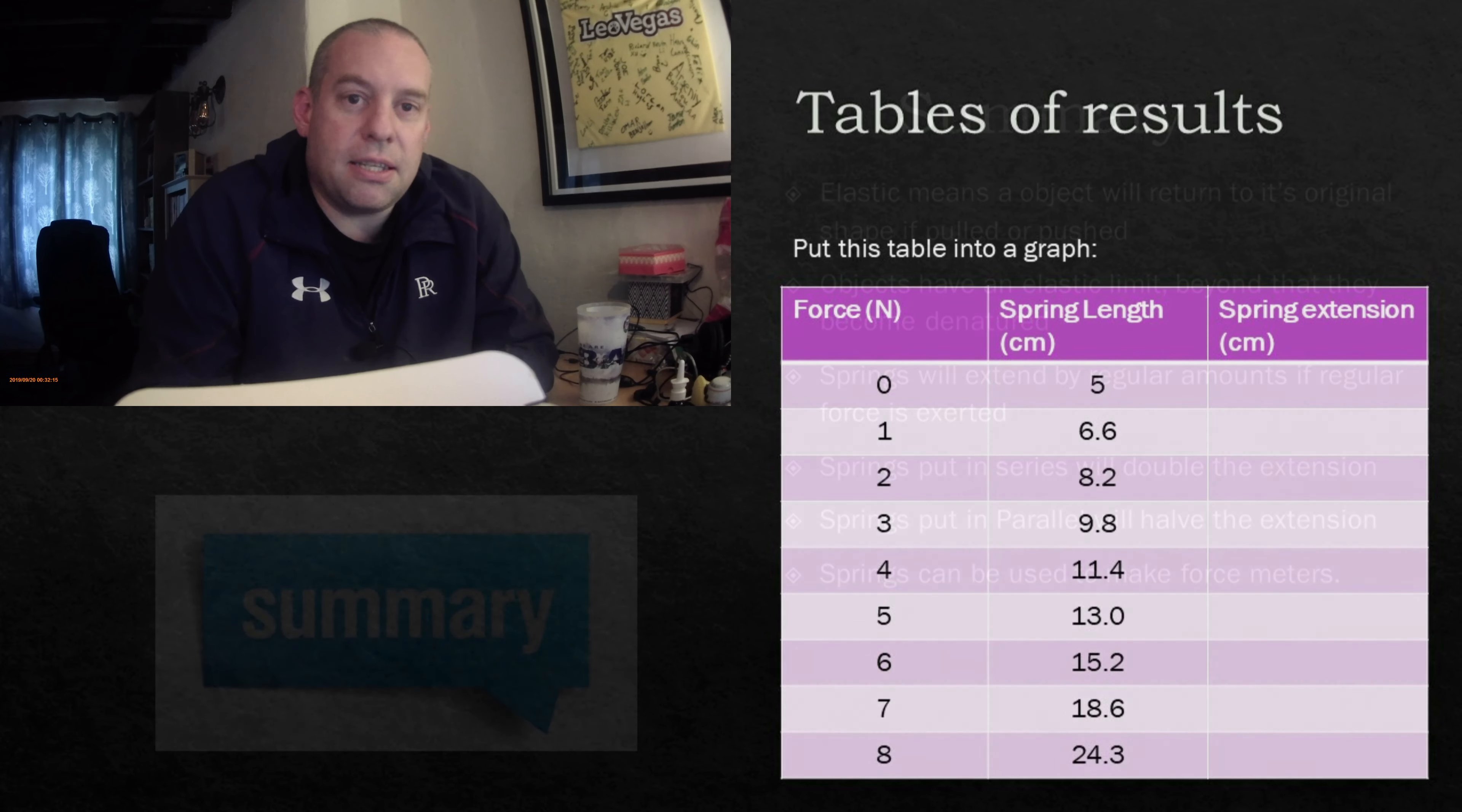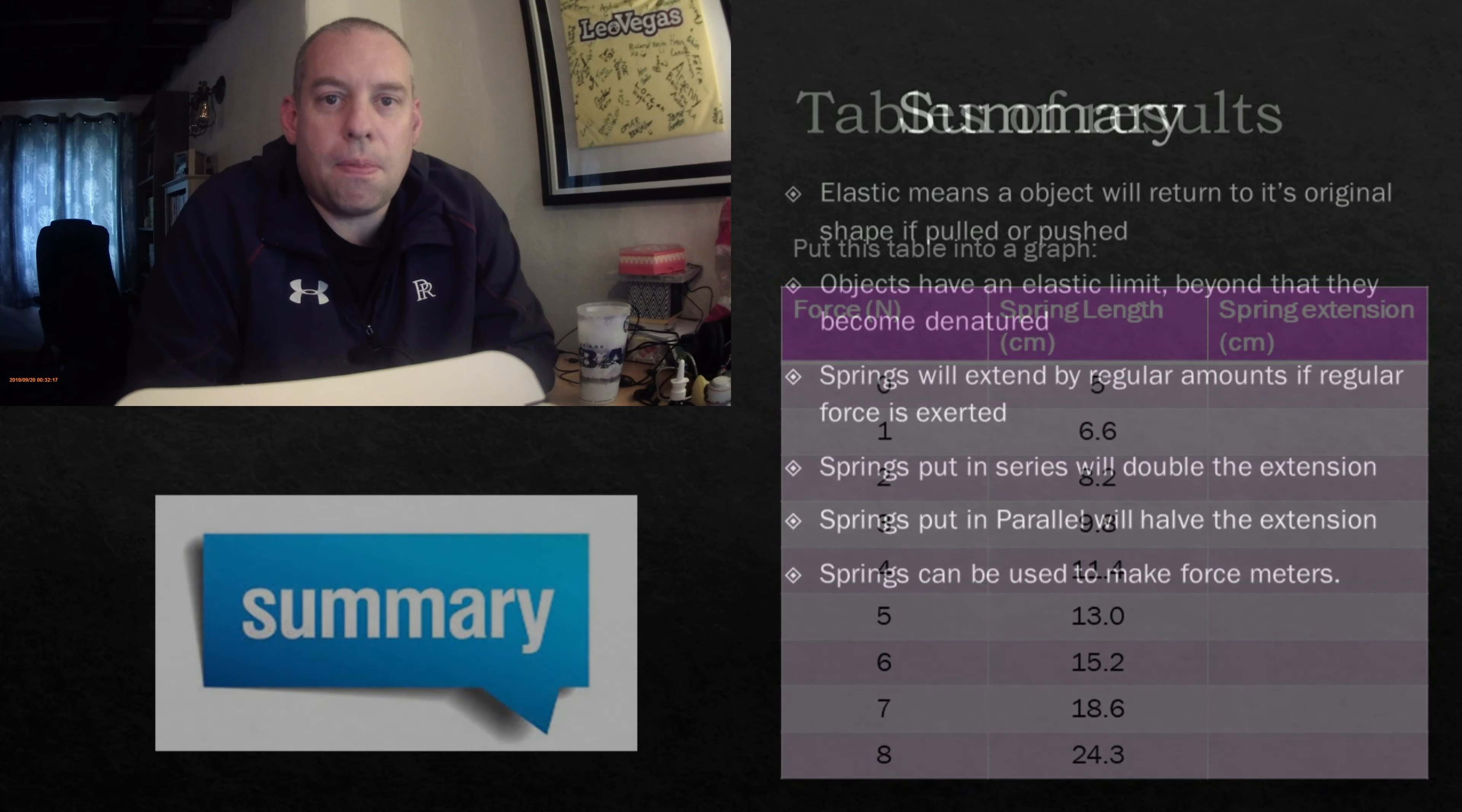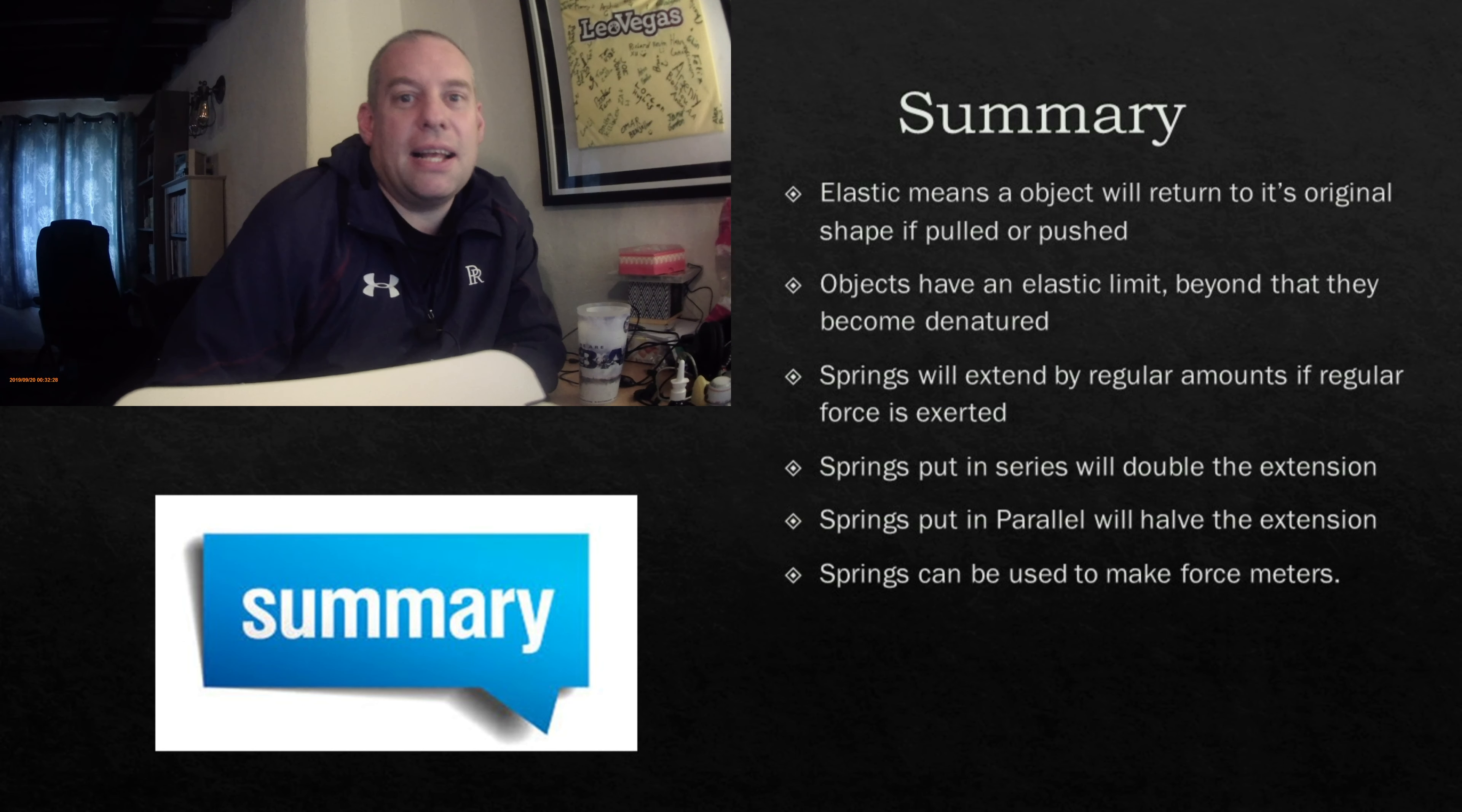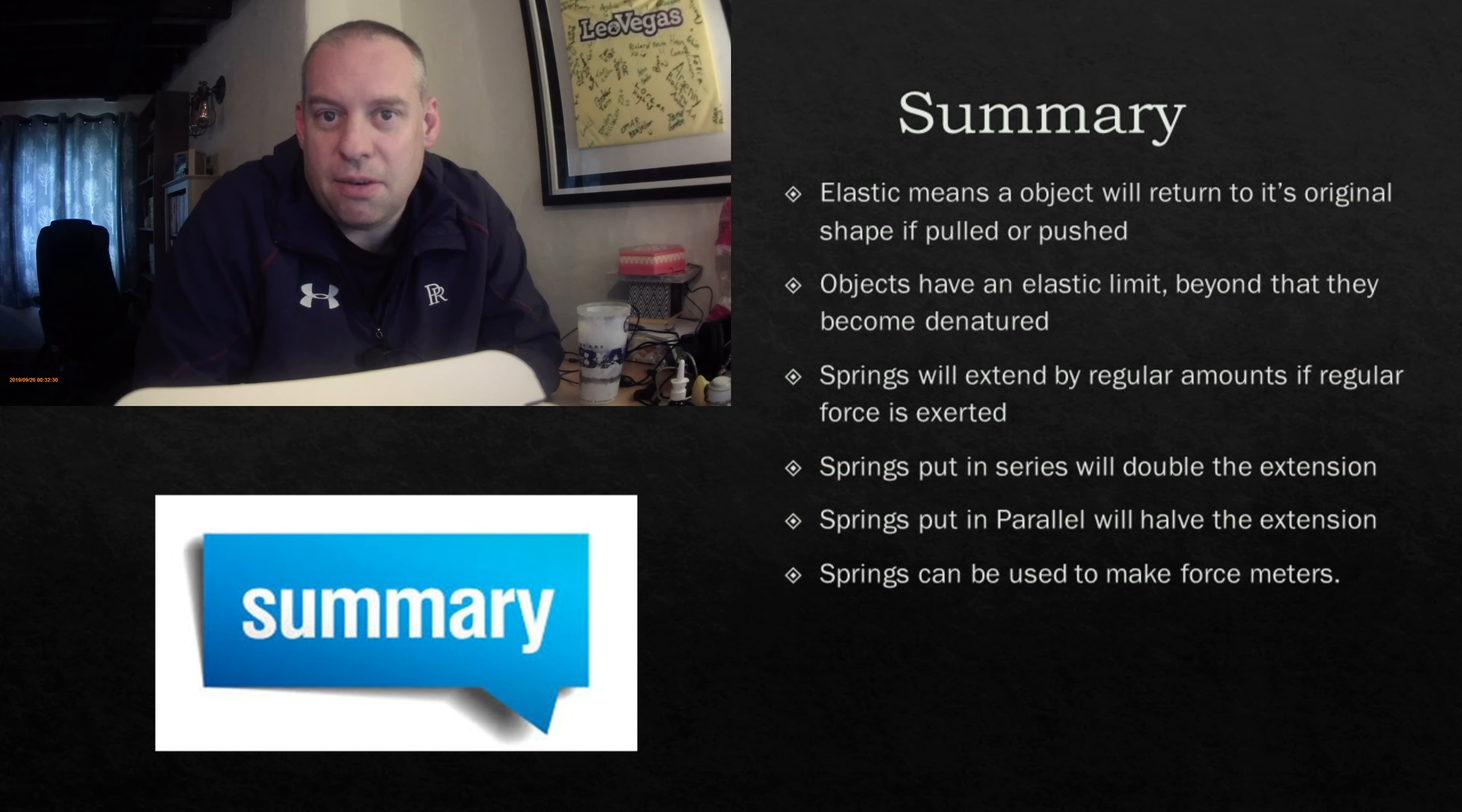So let's summarize, shall we? For springs, elastic means an object will return to its shape when pushed or pulled. So we can change that shape, we can return back. Every object has an elastic limit. That limit may be zero, which means it will just change shape anyway. But when it goes beyond that elastic limit, it becomes denatured.